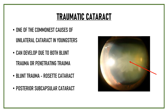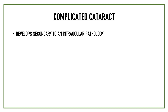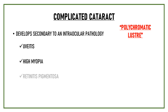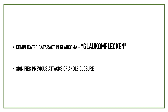A complicated cataract strictly refers to a cataract that develops secondary to an intraocular pathology. The various intraocular pathologies that can lead to cataract formation include uveitis — anterior, posterior, or intermediate. Polychromatic lustre is characteristically seen in complicated cataracts. Other ocular pathologies include high myopia, retinitis pigmentosa, retinopathy of prematurity, retinal detachment, intraocular tumors like retinoblastoma, persistent hyperplastic primary vitreous, and glaucoma. The cataract seen in glaucoma is known as glaucomflecken, and it signifies previous attacks of angle closure in the eye.